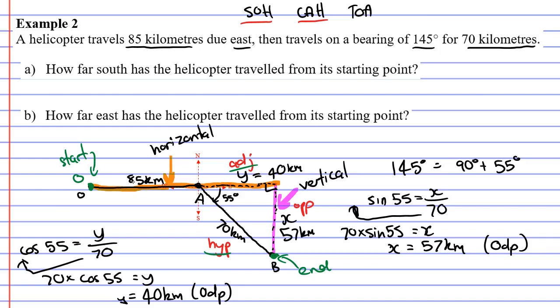If you think of question A, which asks how far south has the helicopter traveled from its starting point, south is a vertical movement. And question B, how far east has the helicopter traveled? East is a horizontal movement. The answer to question A is 57 kilometers, because the vertical component, which was in pink, was 57 kilometers long. For question B, the horizontal or orange line actually has two parts to it. It has an 85 kilometer part and a 40 kilometer part. For that one, we need to add up those two distances. 85 plus 40, which is 125 kilometers.